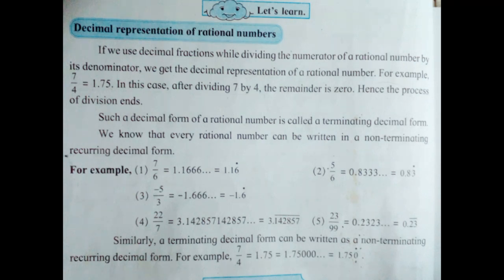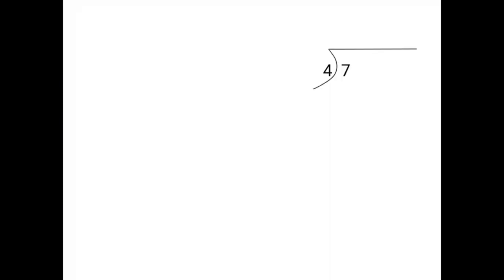We will divide the number 7 by 4 and check whether we get remainder 0 or not. 4 ones are 4. 7 minus 4, remainder 3. Put the decimal point, and on the quotient place also you have to put the decimal point.